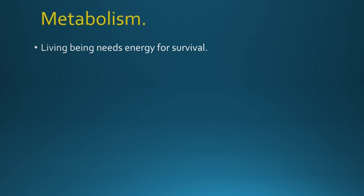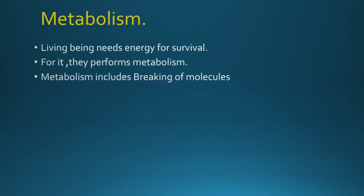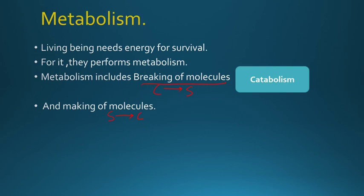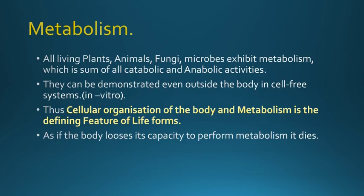Metabolism. Living beings need energy for survival, so they perform metabolism. What is metabolism? It includes two important steps: catabolism and anabolism. Catabolism is the breaking of complex substances into simple ones — for example, complex carbohydrates are converted into glucose, proteins into amino acids, and fats into fatty acids and glycerol. Anabolism is the making of molecules — simple substances are converted to complex ones, such as extra glucose being converted by the liver to glycogen and stored in muscles. Catabolism and anabolism together form metabolism.